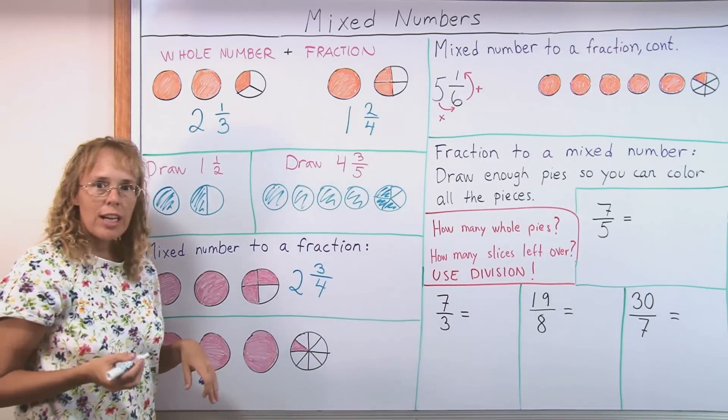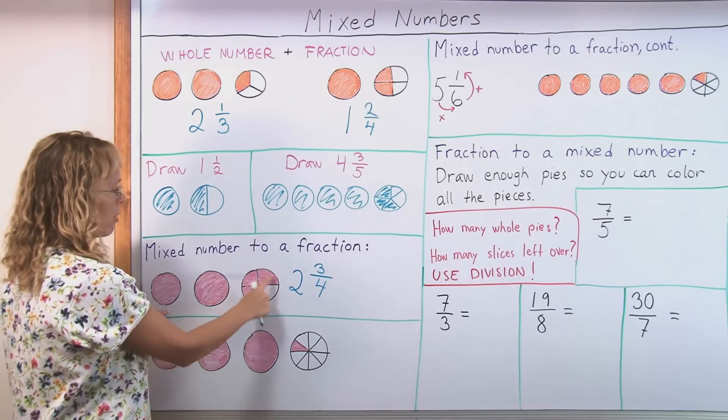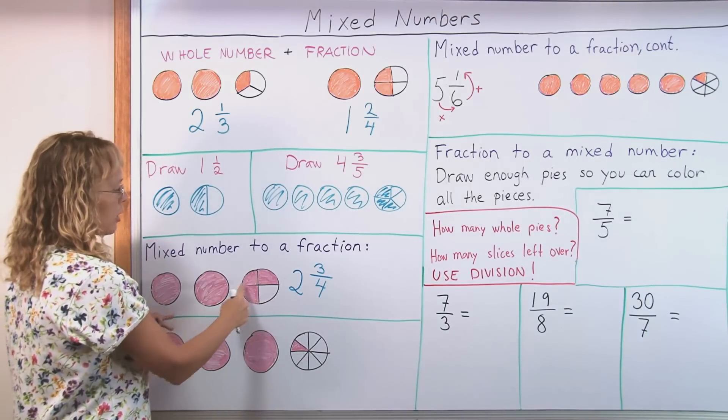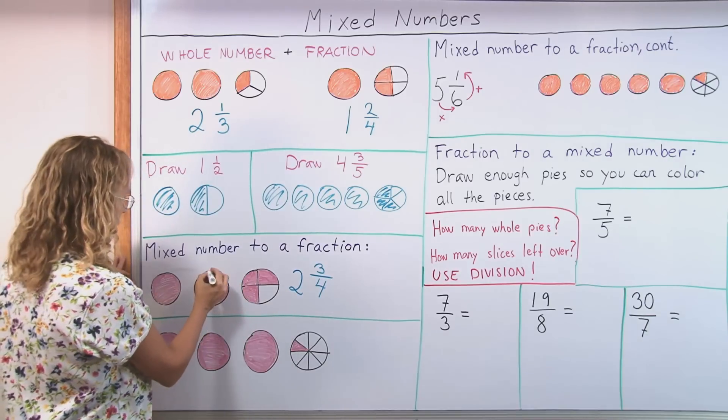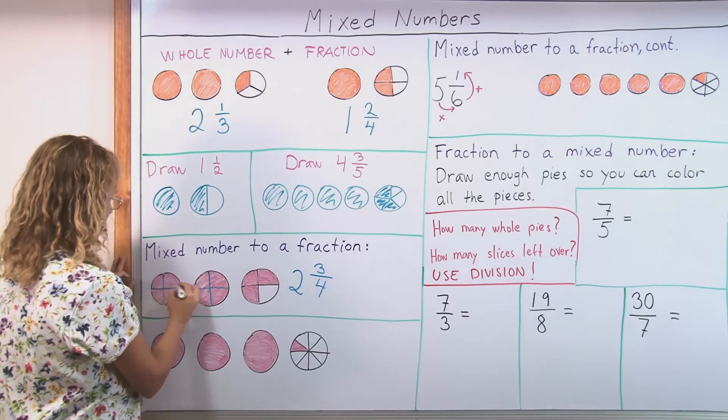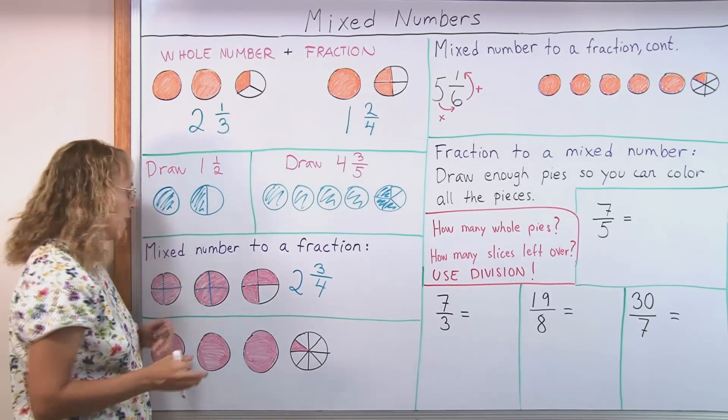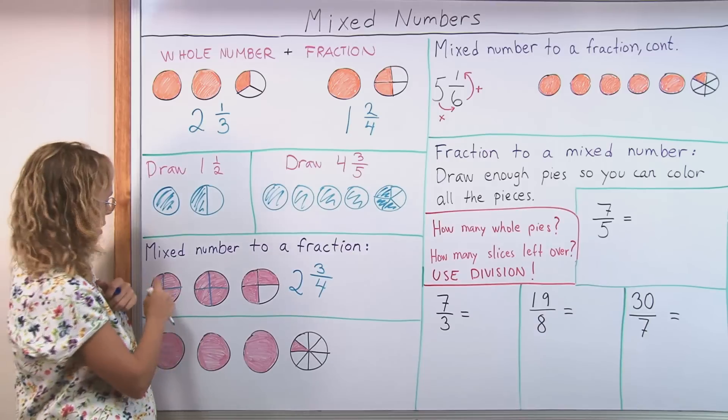To change it into a fraction we need to divide these whole pies into same kind of parts as here. This was divided into four parts so we need to divide these into four parts too. There. And now just count how many fourths there are. You can count or the student can count. One, two, three, four,